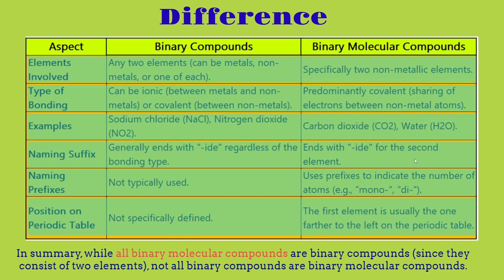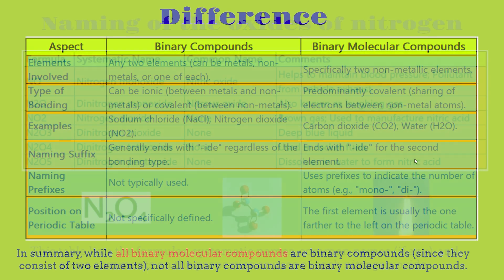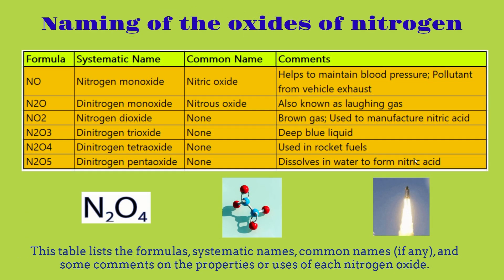One thing to note is that while all binary molecular compounds are binary compounds — since they consist of two elements — that doesn't mean all binary compounds are binary molecular compounds. This is because there are also binary ionic compounds, which we're going to cover in our next video.